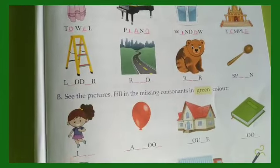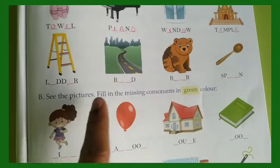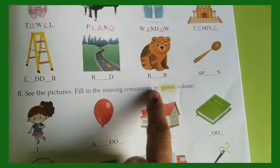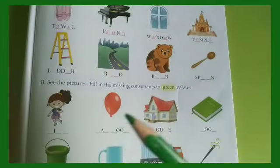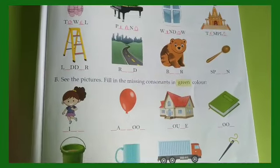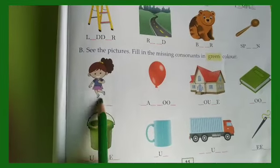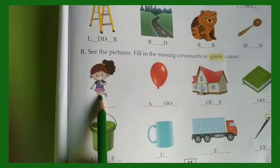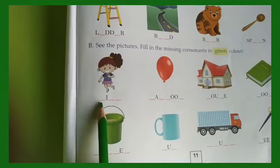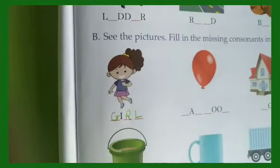Let's do Section B. See the pictures — fill in the missing consonants in green color. So children, I am ready with a green color pencil. Let us do this written work. This is a girl, and we are going to fill in with consonants.